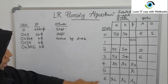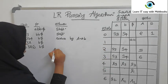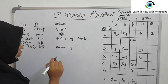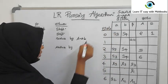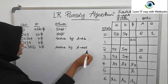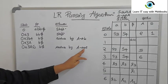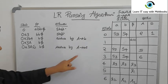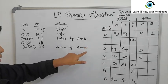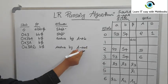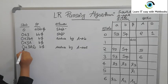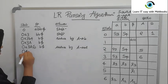Now 6B — check row 6 and column B — it is R2. Reduce by production 2: A→AA. There are 2 symbols on the right-hand side, so 2×2=4 symbols must be popped off the stack. After popping 4 symbols we are left with just state 0 on the stack. Push the left-hand side A onto the stack.